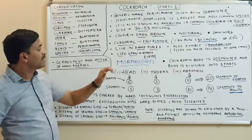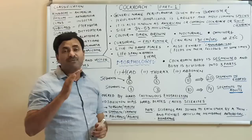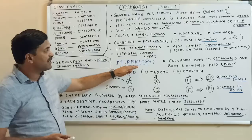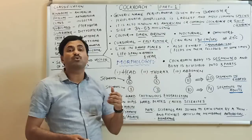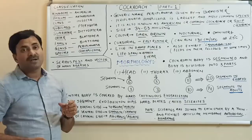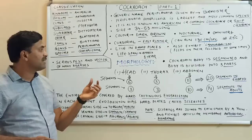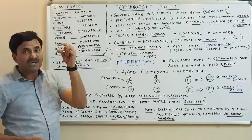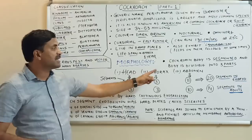To study the cockroach in detail we need to study its morphology and anatomy. Starting with morphology: the body is truly segmented — a feature called metamerism. The entire body is divisible into three parts: head, thorax, and abdomen. The head is the anteriormost part, followed by the thorax, and then the abdomen.